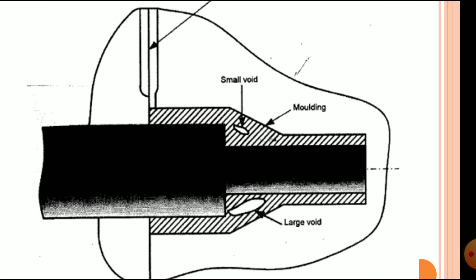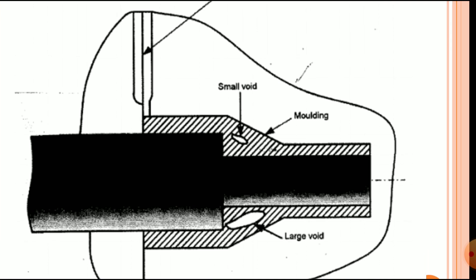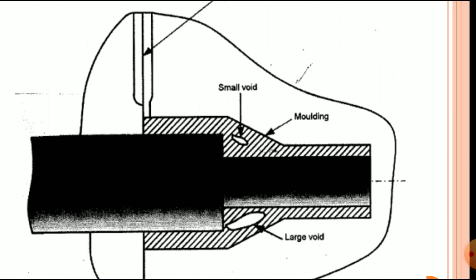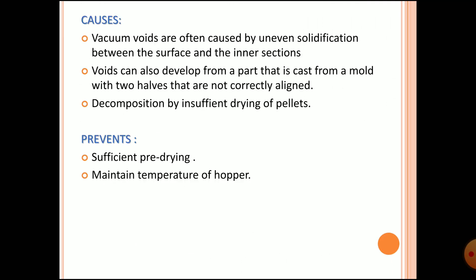As you can see in the image, a small void is found — and for larger wall thickness areas, a large void. You have to ensure that your part has equal wall thickness and not varying wall thickness. Vacuum voids are often caused by uneven solidification between the surface and the inner section. Voids can also develop from a part cast from a mold with two halves that are not correctly aligned. Decomposition can also occur due to insufficient drying of pellets.